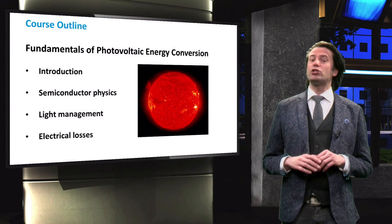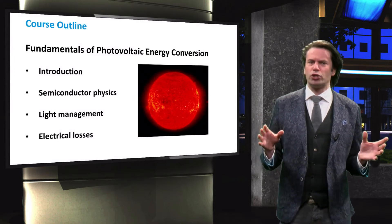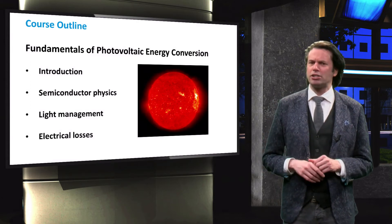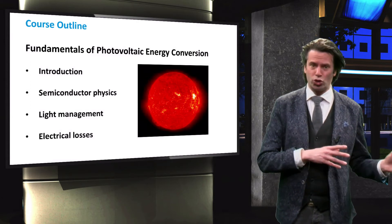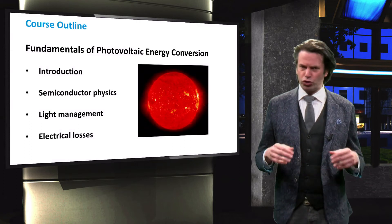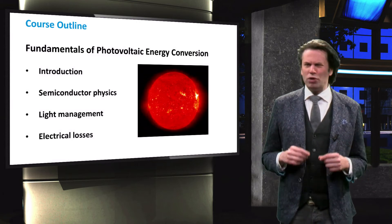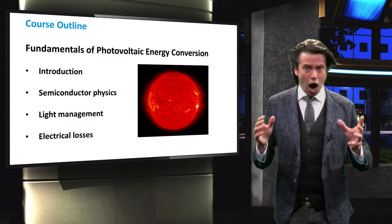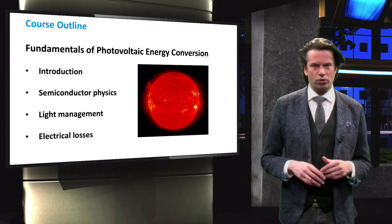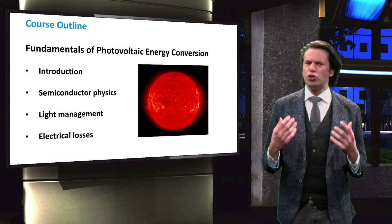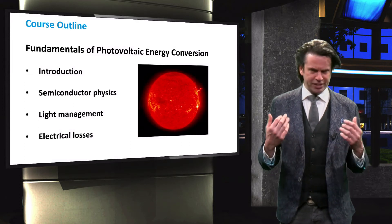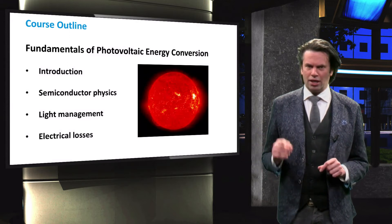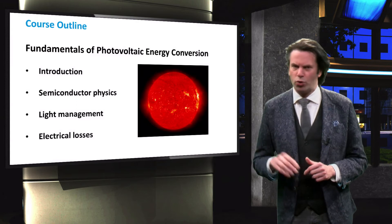Then we will spend two weeks on light management. This part of the course will focus on optics concepts and light trapping strategies in order to maximize light absorption in a solar cell. The final section of this course serves as a wrap-up. We will look at all the concepts given in the course so far and find out how they result in electrical losses. This last week will give you the tools needed as a photovoltaic expert to properly design and engineer solar cells. Let's go through all of these four sections in a bit more detail.